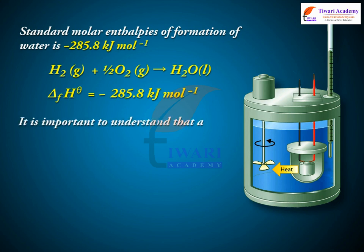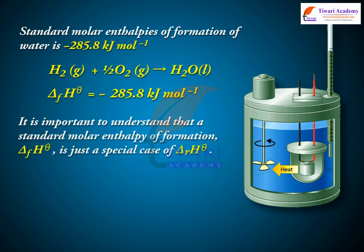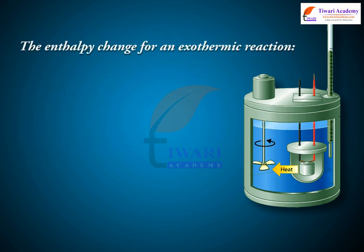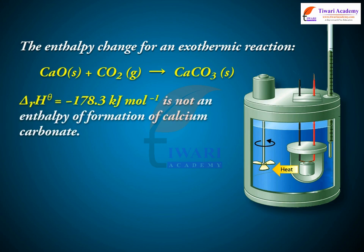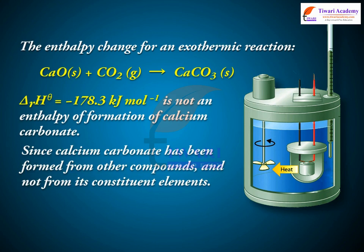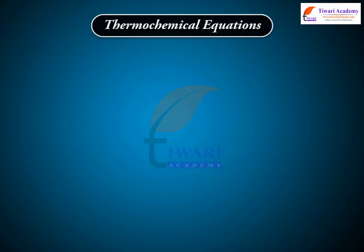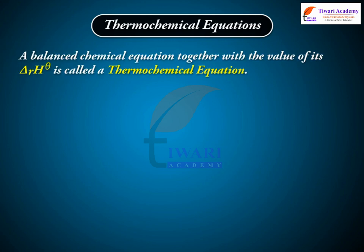It is important to understand that the standard molar enthalpy of formation, delta-f H theta, is just a special case of delta-R H theta. For example, the enthalpy change for the exothermic reaction CaO(s) + CO2(g) → CaCO3(s), where delta-R H theta = −178.3 kJ/mol, is not an enthalpy of formation of calcium carbonate since it is formed from other compounds, not from its constituent elements. A balanced chemical equation together with the value of its delta-R H theta is called a thermochemical equation.